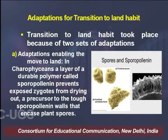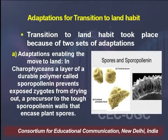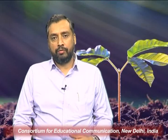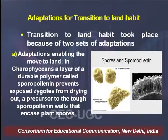Let us move on to various features which allowed this transition from aquatic habitat to land habitat to take place. There were many adaptations which took place in these evolving plants. For convenience of study, we can bifurcate these adaptations into two different types: those adaptations which were already present in their aquatic ancestors and which enabled the plant world to make this transition towards land.